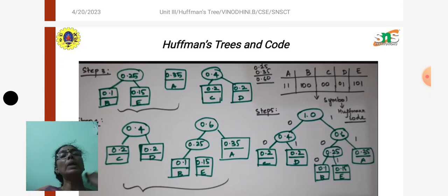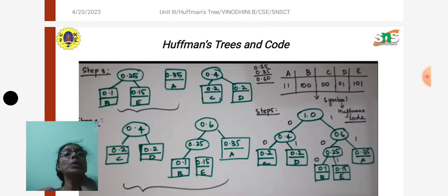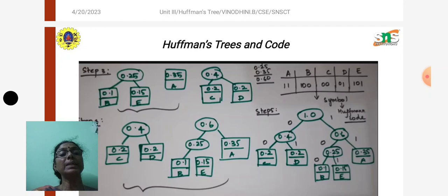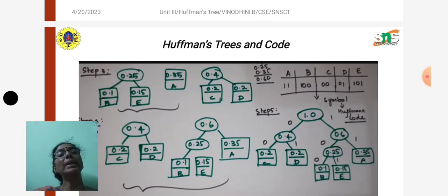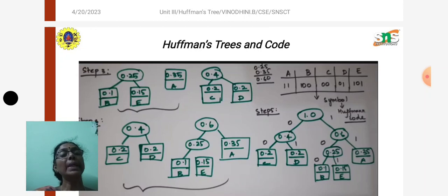In step four, we again add the first two symbols, find the output frequency, and arrange in ascending order. The output of step four: we have a root node of 0.60 with the node 0.25 (containing b and e) as its left child and symbol a as its right child. The node 0.40 (containing c and d) remains. So the arrangement after step four looks like this.